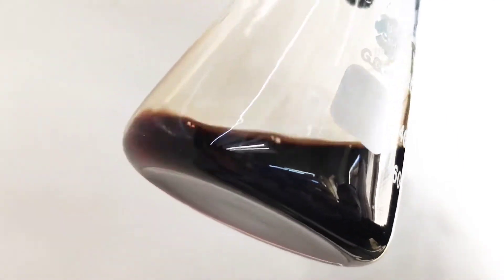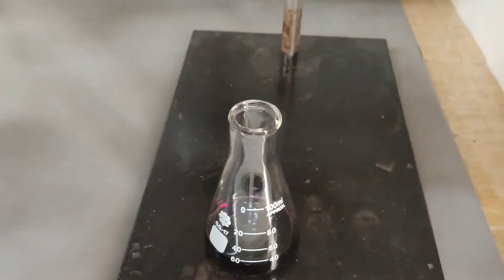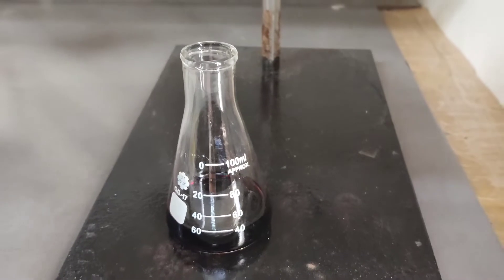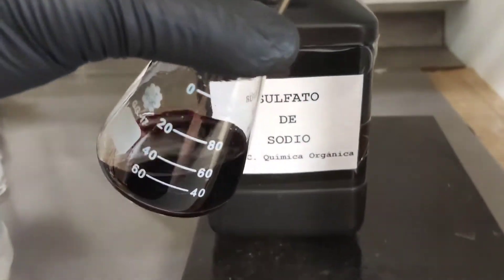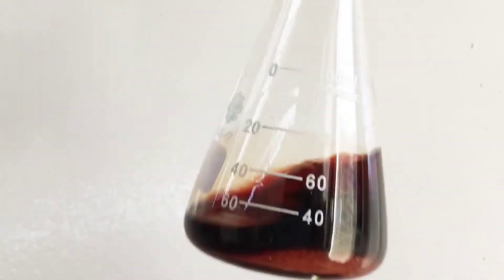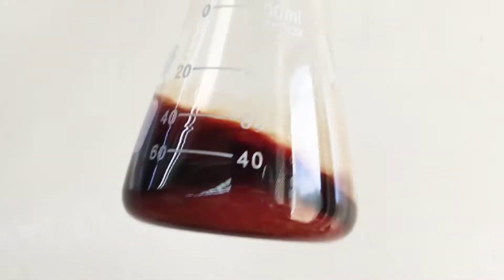Against the light we can see the red color much better. To remove the water we add some sodium sulfate into the solution and then we stir the solution and let it stand for a few minutes in order for the sodium sulfate to suck up the water.